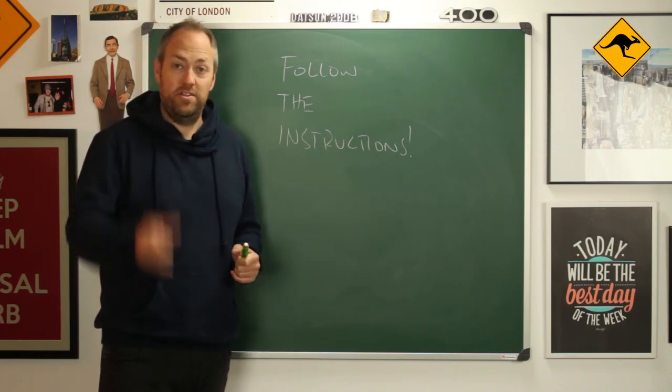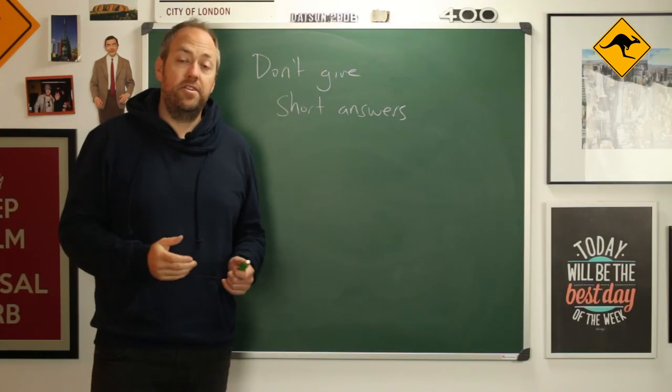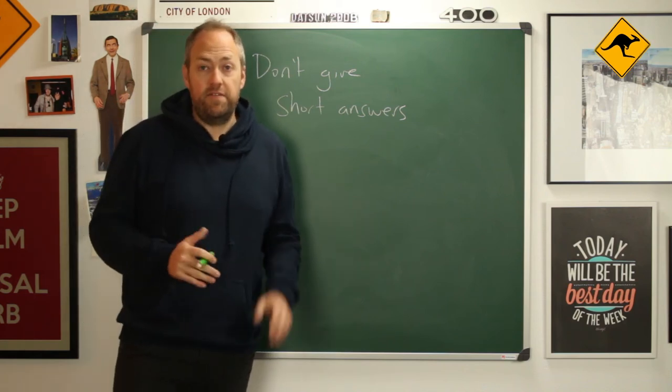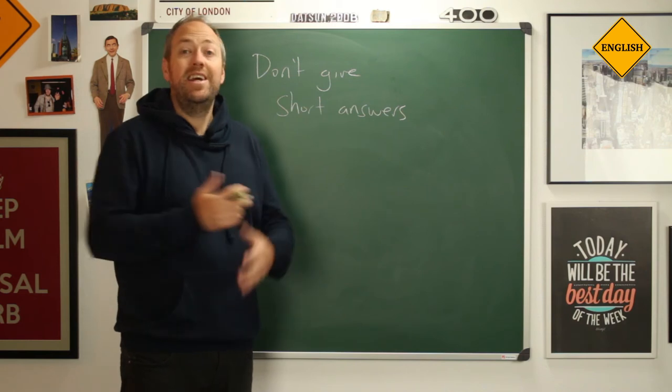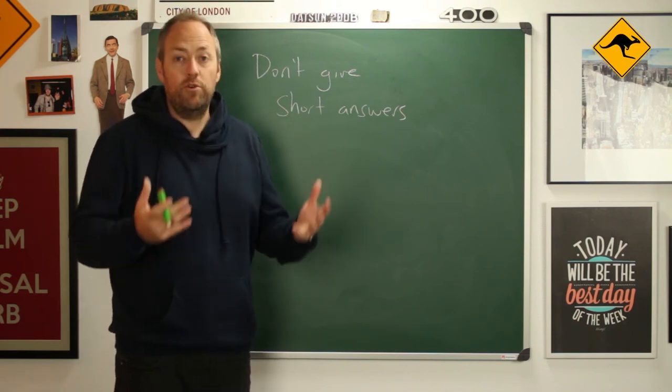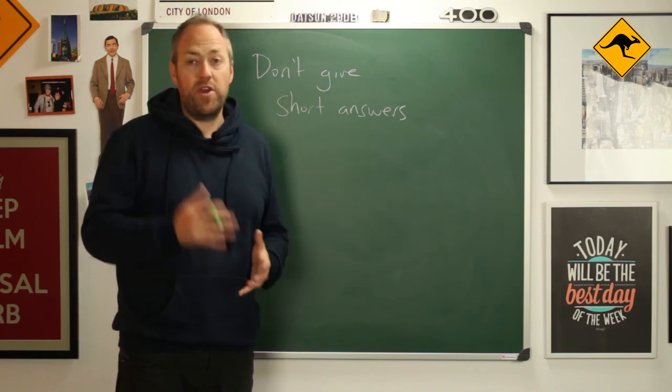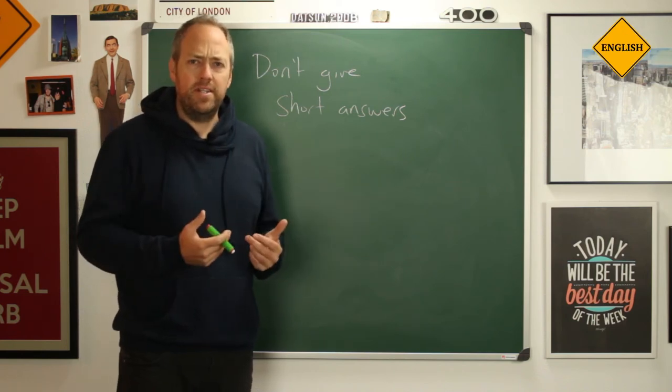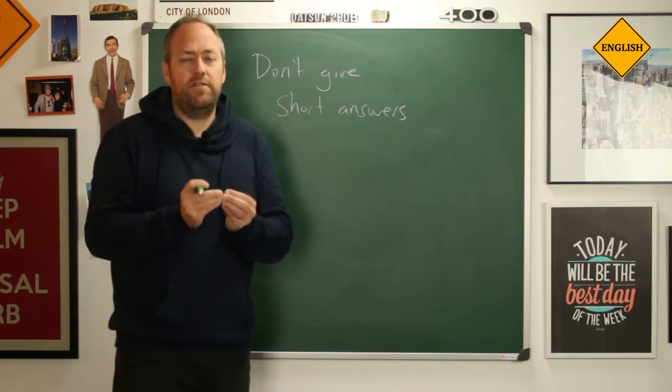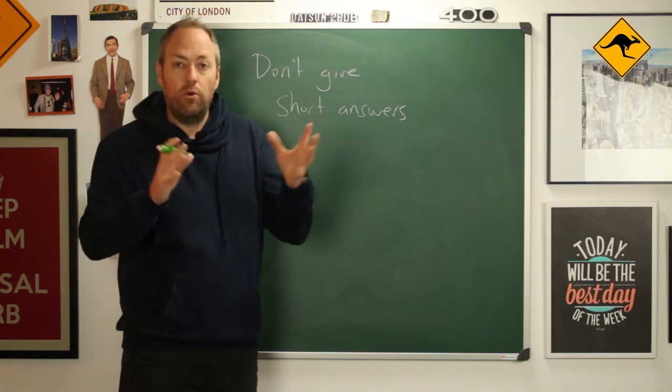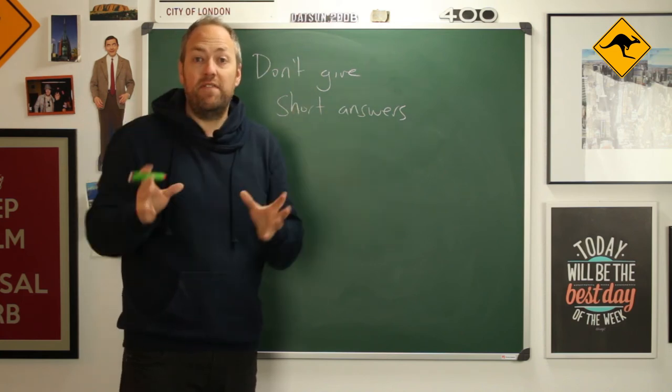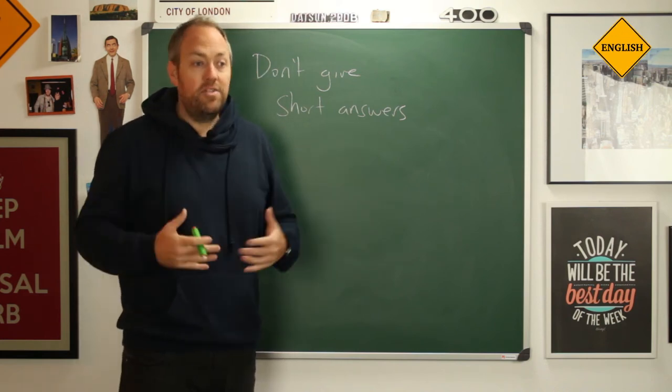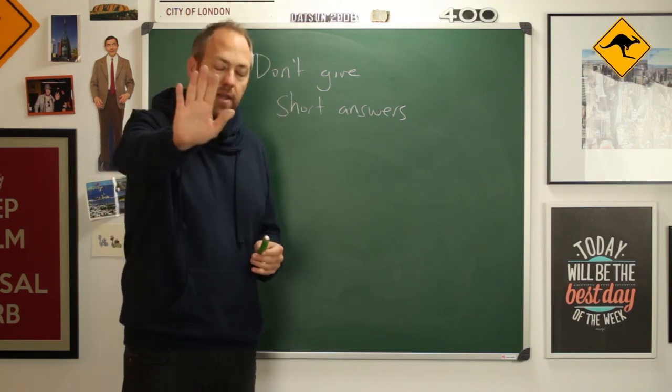My next tip is don't give short answers. If the examiner asks you where do you live, don't say Spain. The exam is your opportunity to show your English, to show whether you're a band three or a band eight, so take every opportunity to speak as much as possible within your capabilities. You could say where in what part of your country that you live, is it in the north, is it in the east, are there any interesting features around, is it next to a lake, is it besides some mountains? Give some extra information with your answers. Let the examiner say okay stop, thank you.